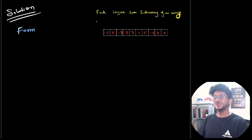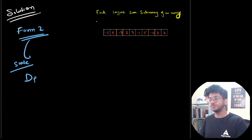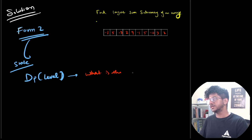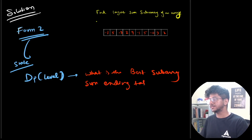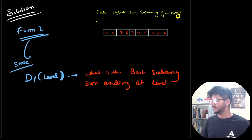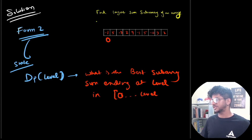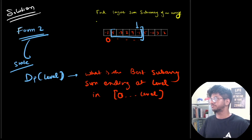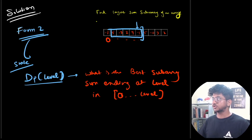What is form two? We're going to see the states: DP of the index or level is going to tell us what is the best subarray sum ending at that index. So DP[level] returns the best subarray sum ending at this index — this element is taken for sure. In this question, we are dealing with non-empty subarrays.